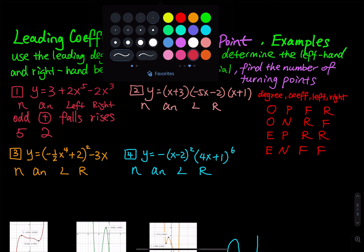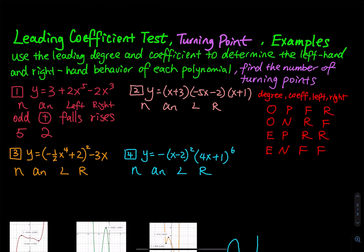For the next one, you might have to look deeper to determine the leading degree. Don't say it's 1 — you have to multiply these three factors. When you take this x times this x times this x, that gives you the highest degree, which equals 3. So the highest degree is 3.